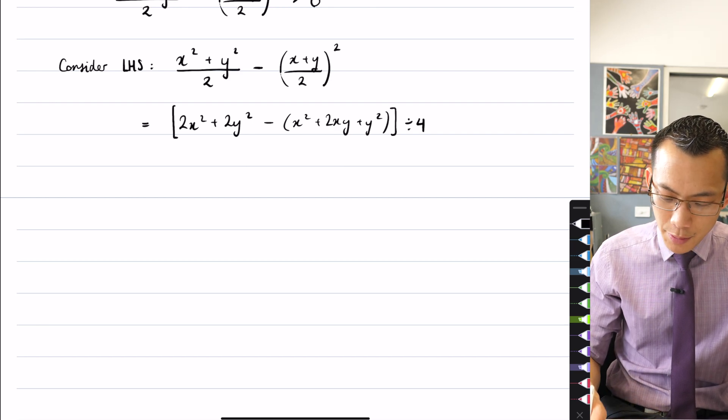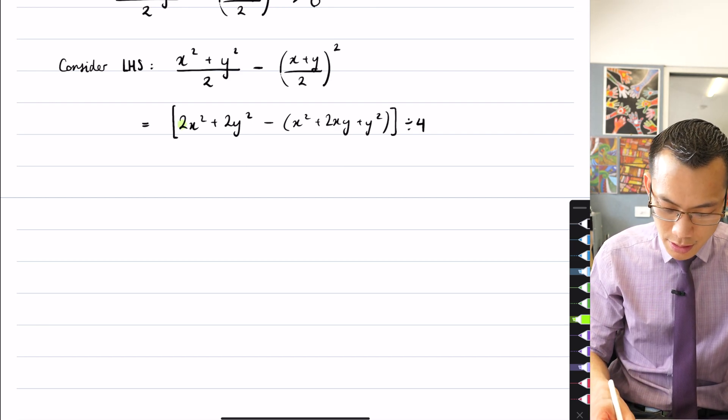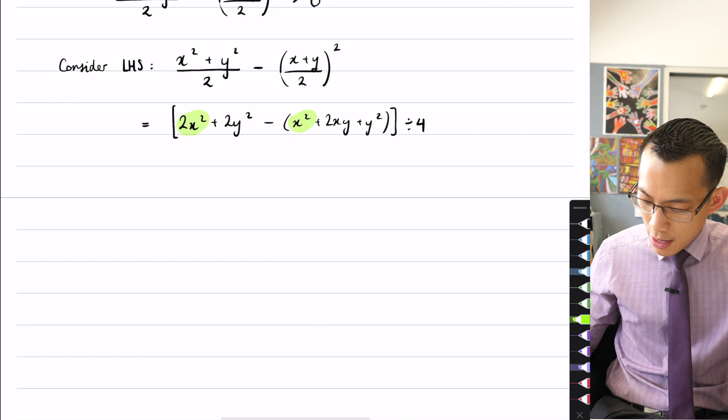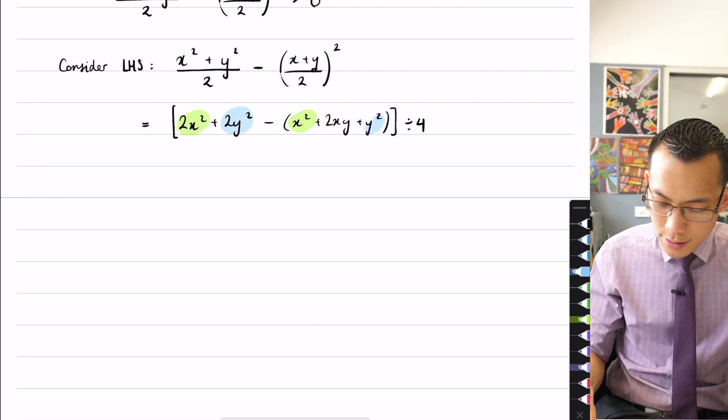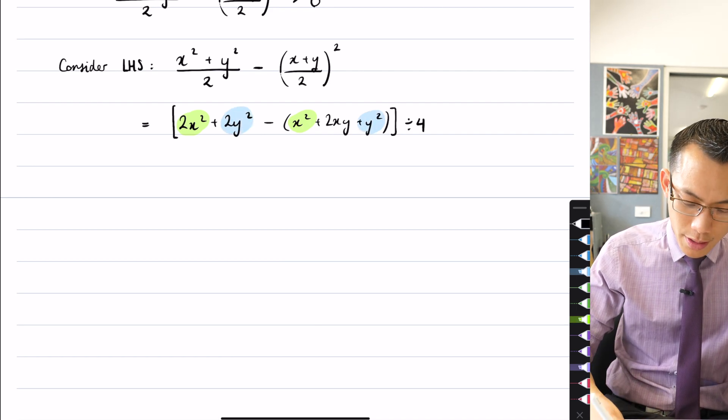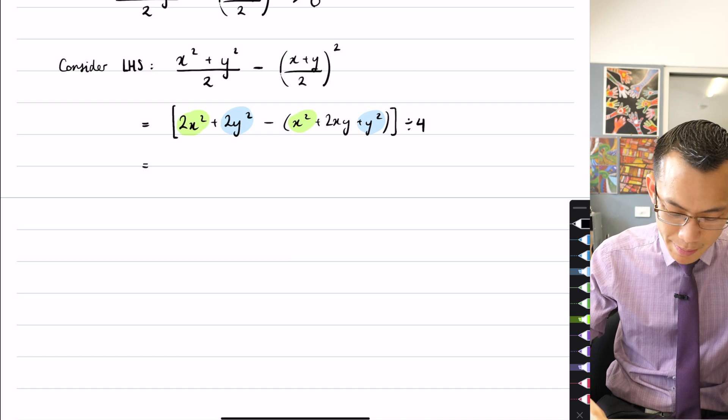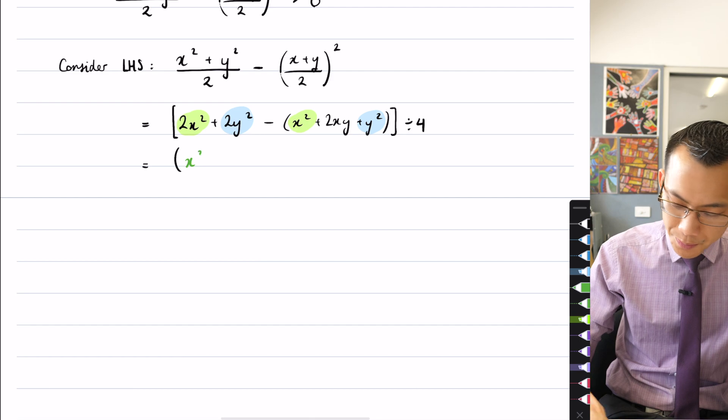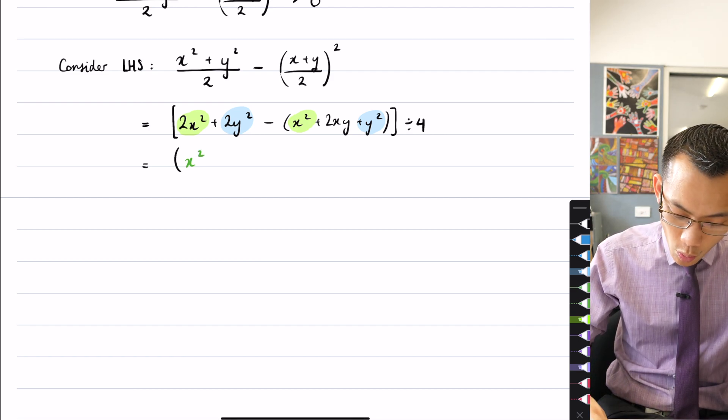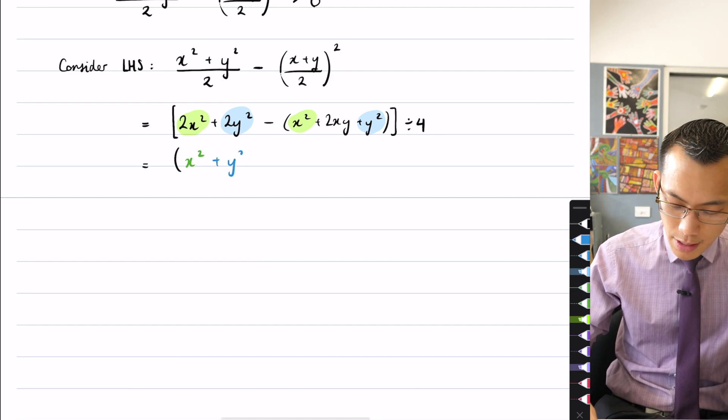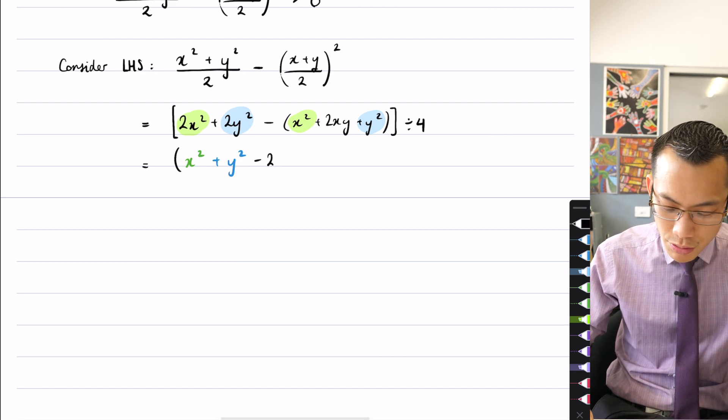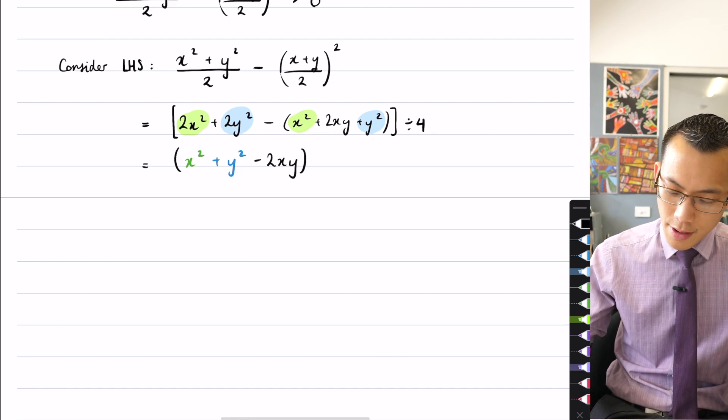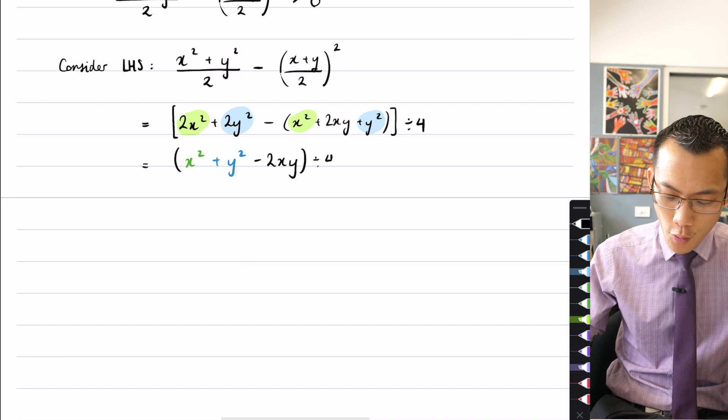You can see here, I'm clearly going to get some like terms here, so there's my x squareds, and there are my y squareds, so what am I going to end up with? I'm going to have just a single x squared, just a single y squared, and then I've got a minus 2xy from that divided by 4.